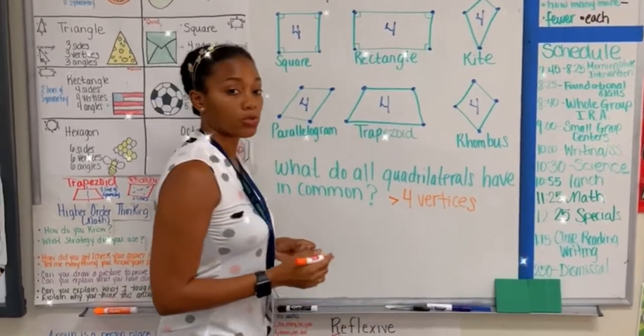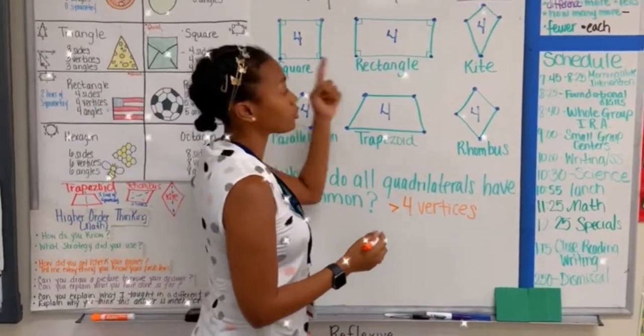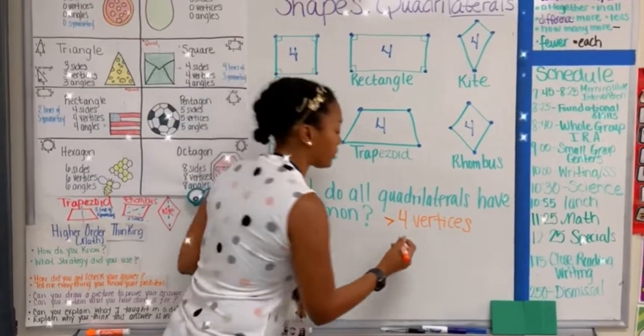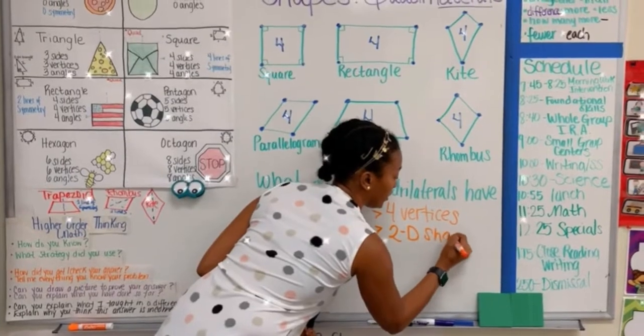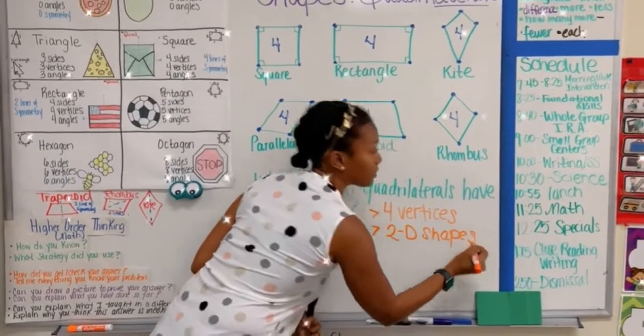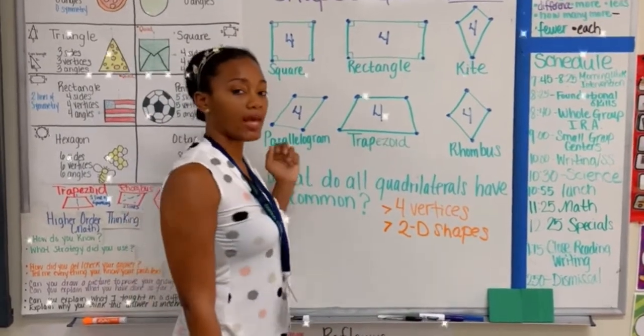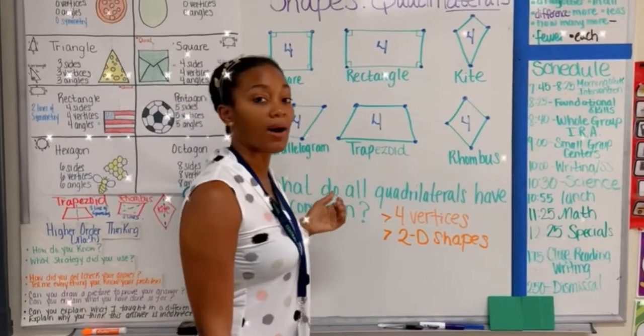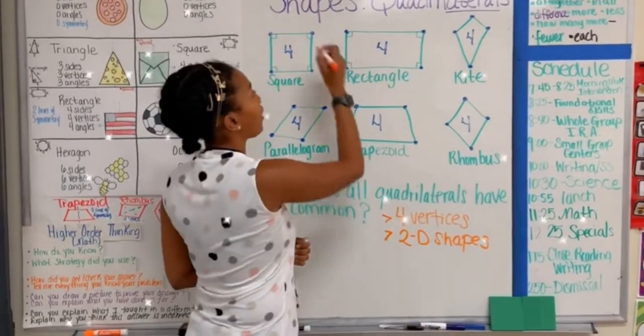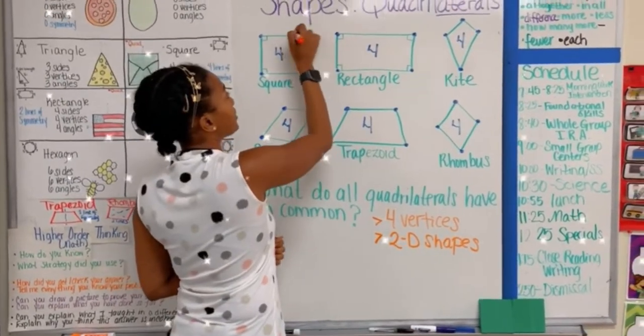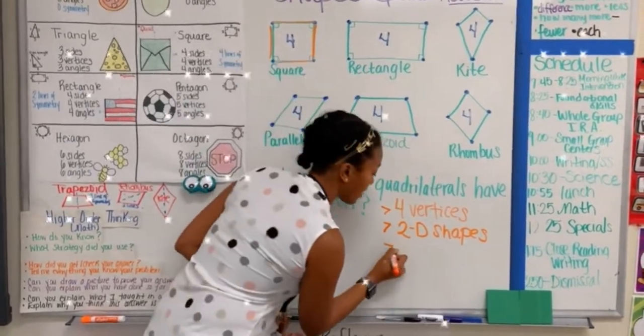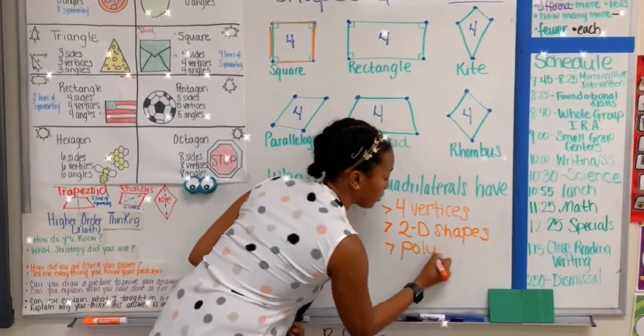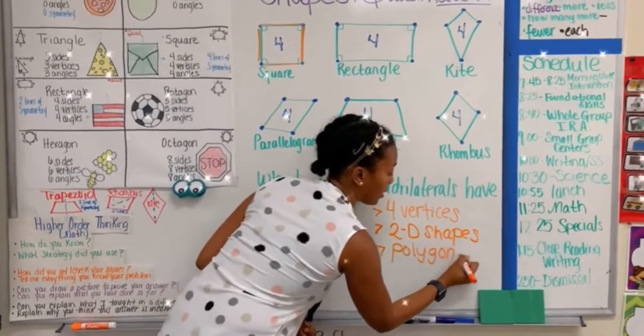One thing I also noticed is that they are all two-dimensional shapes. So I will add that too. They are 2D shapes. I also noticed that each quadrilateral is a polygon because they all have straight lines and they are all closed. They are all polygons.